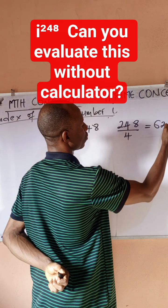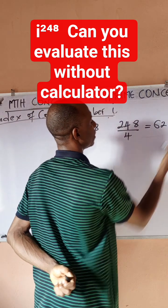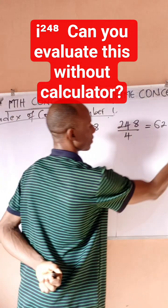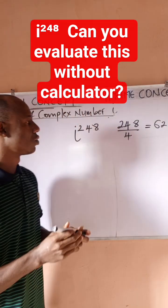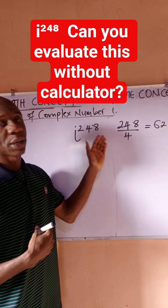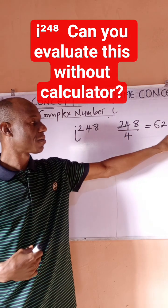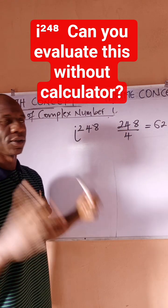Whenever you have this kind of powers, once you divide by 4, the remainder is what you're interested in. So it means that i to power 248 is the same as i to power the remainder, which is 0.